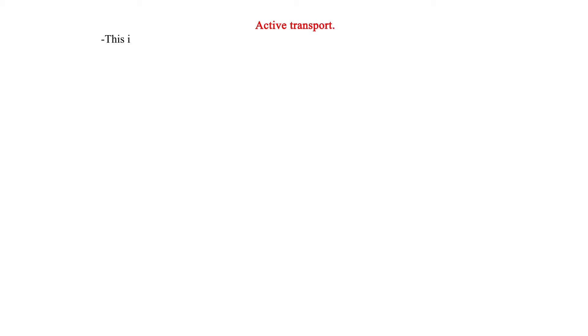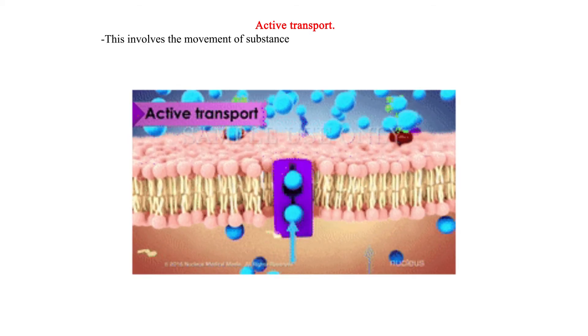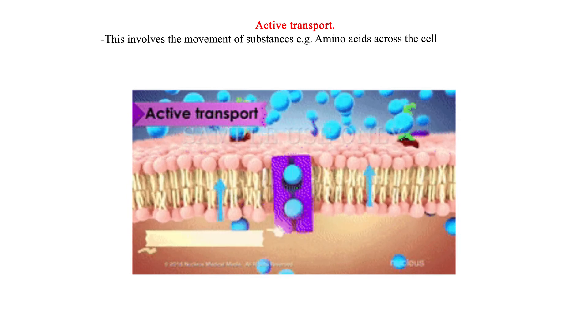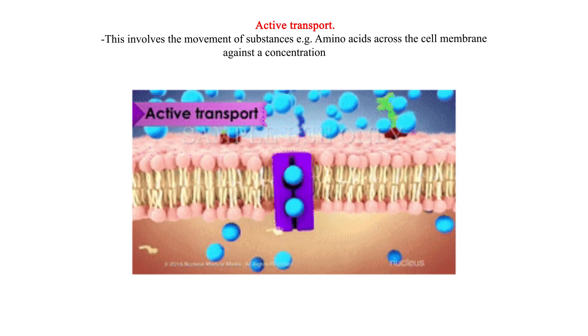Active transport involves the movement of substances, e.g., amino acids, across the cell membrane against a concentration gradient.